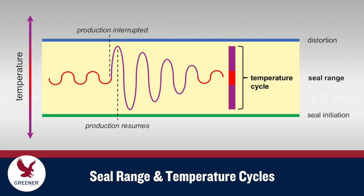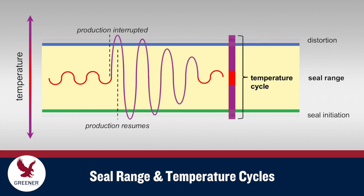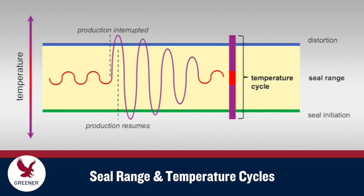An appropriate seal range must allow for sealing jaw temperature cycles that include the impact of production interruptions. When materials with a narrower seal range are run, or when temperatures cycle above or below the seal range, poorly sealed and distorted packages are produced.